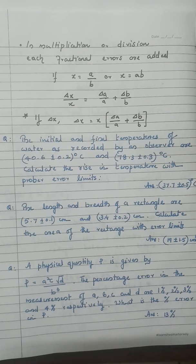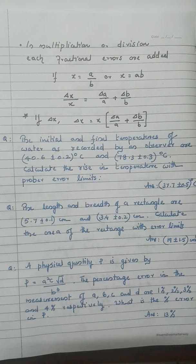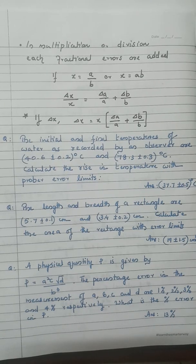Example: the initial and final temperatures of water are recorded as 40.6 ± 0.2°C and 78.3 ± 0.3°C. Calculate the rise in temperature. Since we are subtracting, the absolute errors are added: 0.2 + 0.3 = 0.5. So the rise in temperature has an absolute error of ±0.5°C.